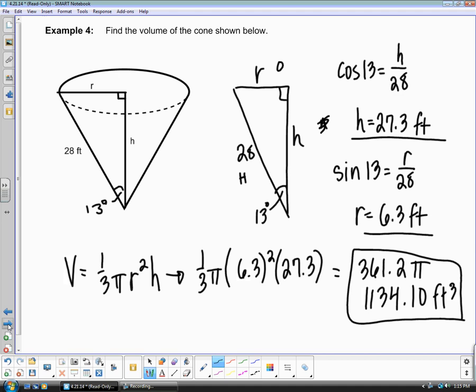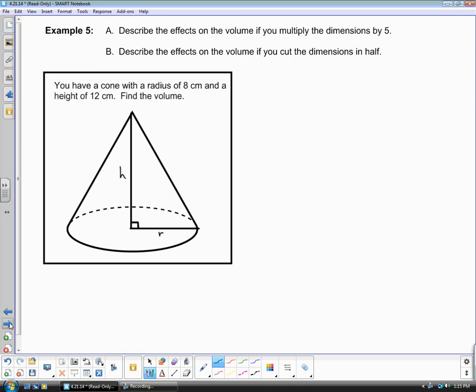The last type of problem that you are going to see is, again, these effects on the volume. If you quadruple or multiply by 5, triple the dimensions. We're going to try something new now. We're going to cut it in half. So the original problem is you have a cone with a radius of 8 centimeters and a height of 12. Find the volume. So let's go ahead and do that. One third pi 8 squared times your height, which is 12. Take a minute and find that volume. Keep it in terms of pi.